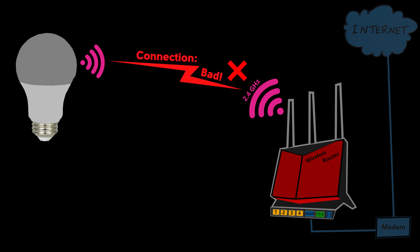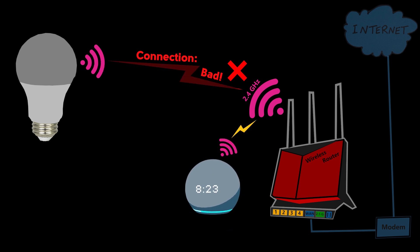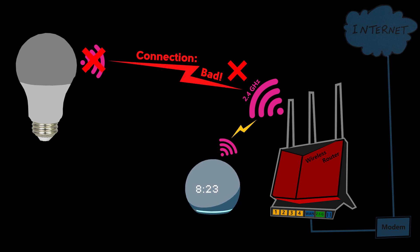The quality of that connection is important too, because if it's not good, then even if I say "Alexa, turn on light one," it might respond: "Light one isn't responding, please check its network connection and power supply." So it's a very good idea to make sure my network — especially my wireless network — is in good shape. But how can I do that?